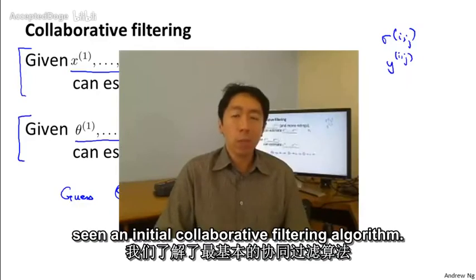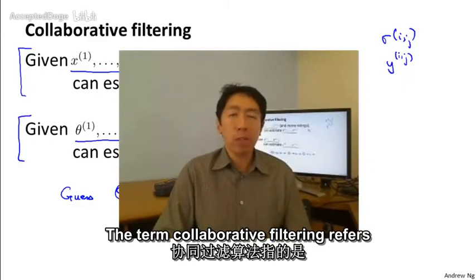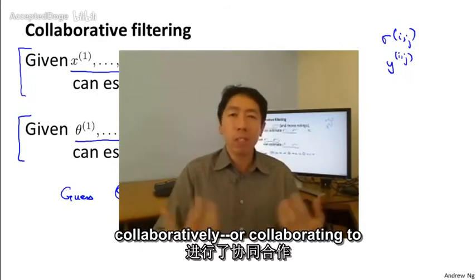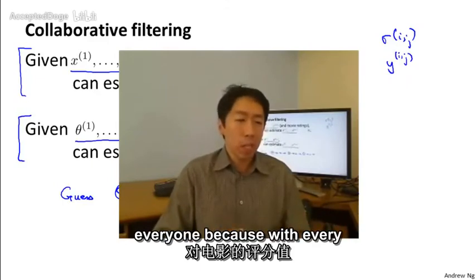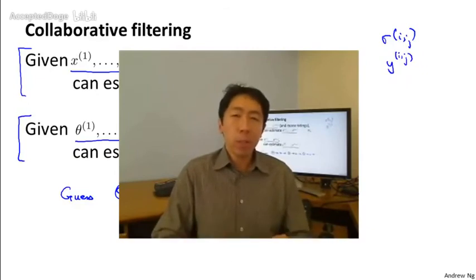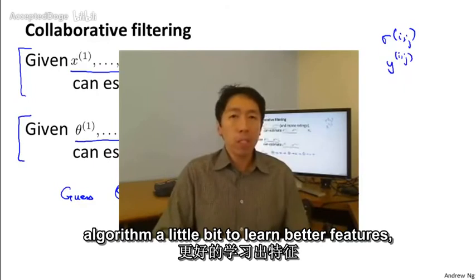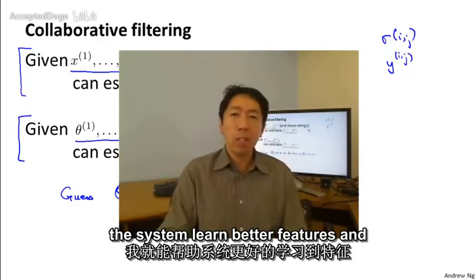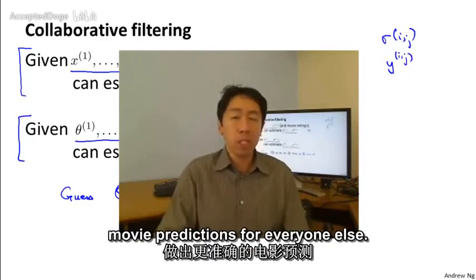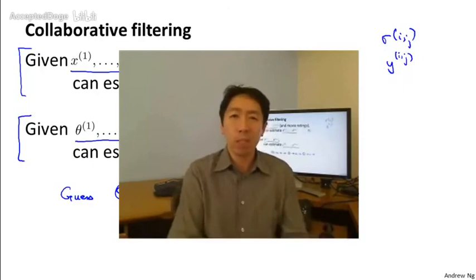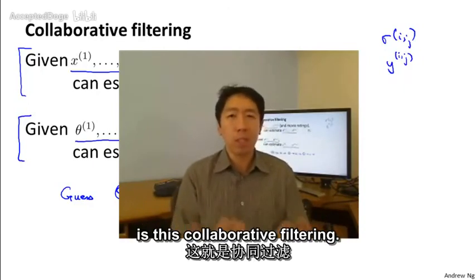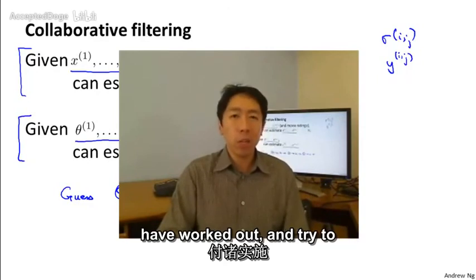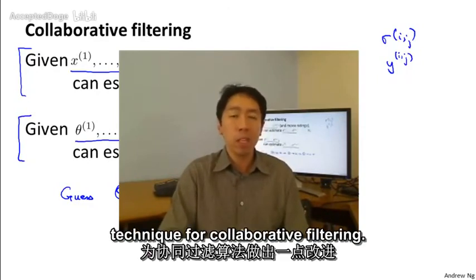So to summarize, in this video, we've seen an initial collaborative filtering algorithm. The term collaborative filtering refers to the observation that when you run this algorithm with a large set of users, what all of these users are effectively doing are sort of collaboratively or collaborating to get better movie ratings for everyone. Because with every user rating some subset of the movies, every user is helping the algorithm a little bit to learn better features. And then by helping, by rating a few movies myself, I will be helping the system learn better features. And then these features can be used by the system to make better movie predictions for everyone else. And so there's a sense of collaboration where every user is helping the system learn better features for the common good. And so this is collaborative filtering. And in the next video, what we're going to do is take the ideas that we've worked out and try to develop an even better algorithm, or even slightly better technique for collaborative filtering.